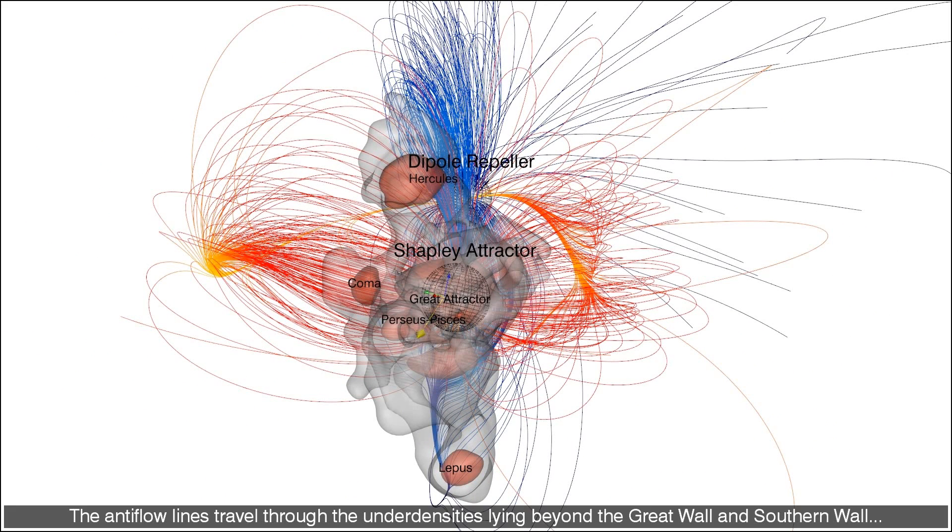The anti-flow develops in the orthogonal plane that corresponds roughly to the supergalactic equator. The anti-flow lines travel through the under densities lying beyond the Great Wall and southern wall, on their way to the region of lowest density, the dipole repeller.